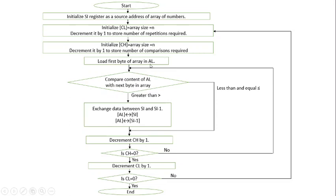We load the first byte of the array into AL. For ascending order, AL should hold the smaller number. We compare the content of AL with the next byte in the array. If AL is less than or equal to the next byte, we move ahead. Otherwise, if AL is greater than the next byte, we need to swap. Since we cannot directly swap between two memory locations with one instruction, we use AL as a temporary register and exchange data between the locations pointed by SI and SI minus one.